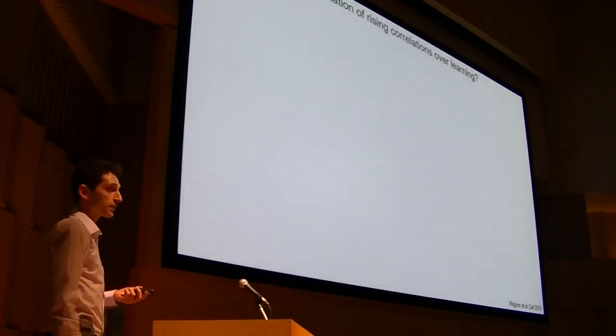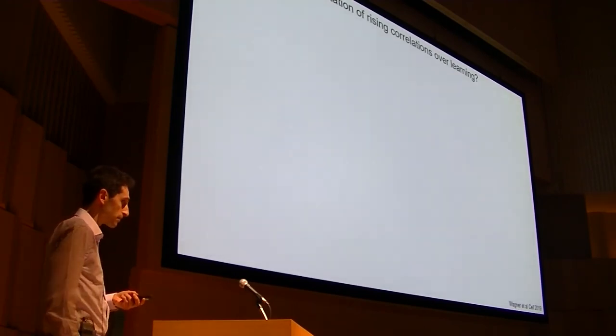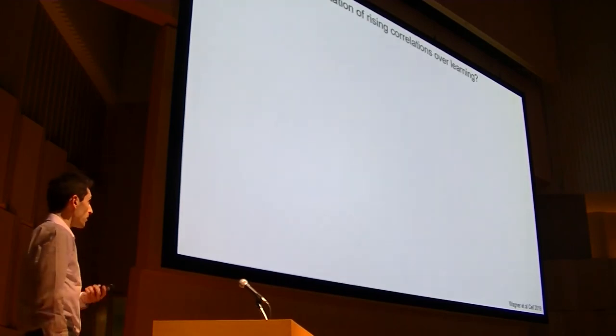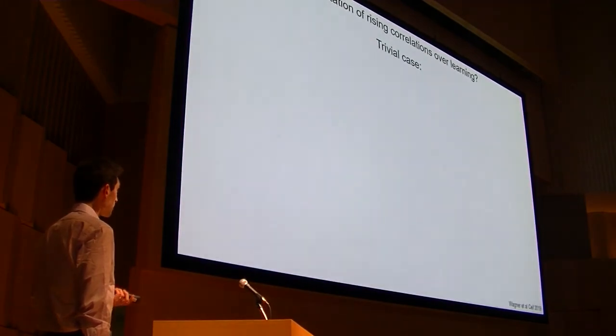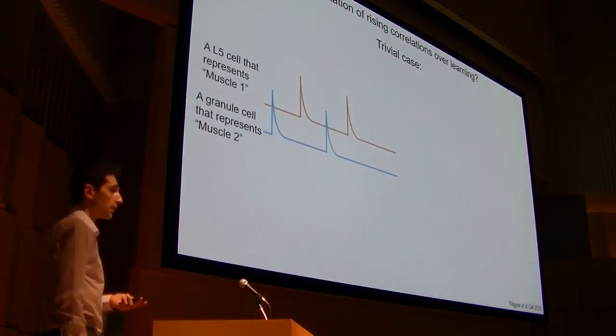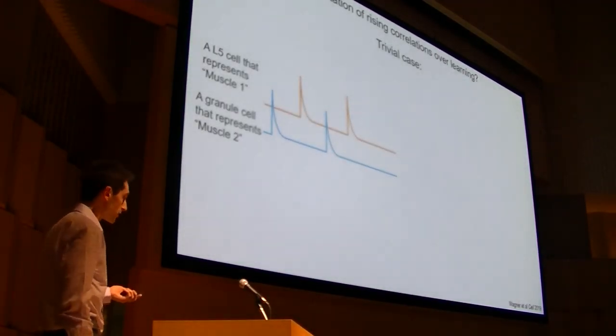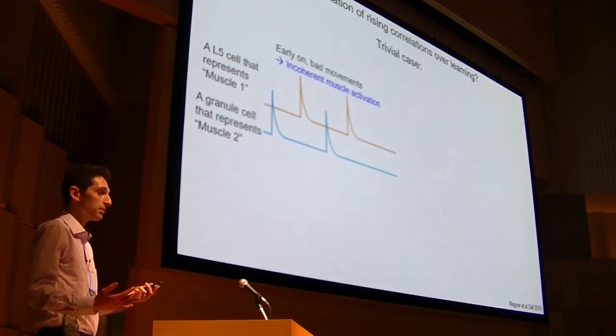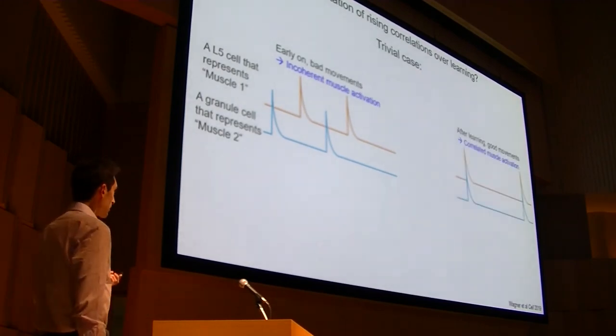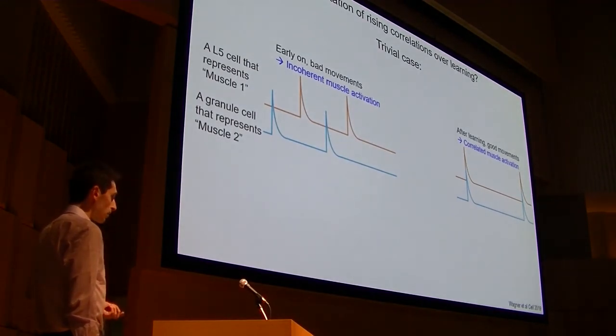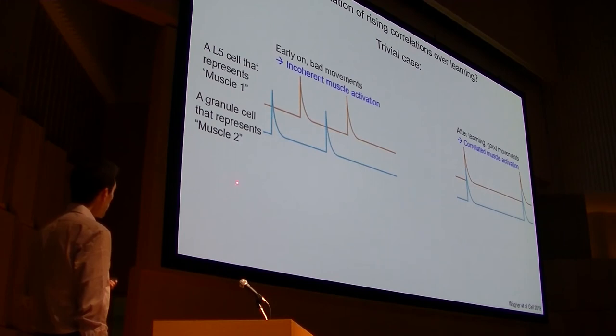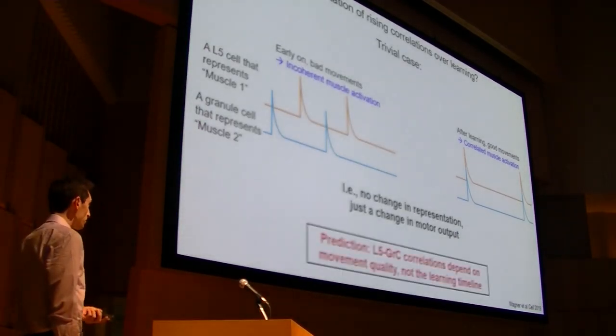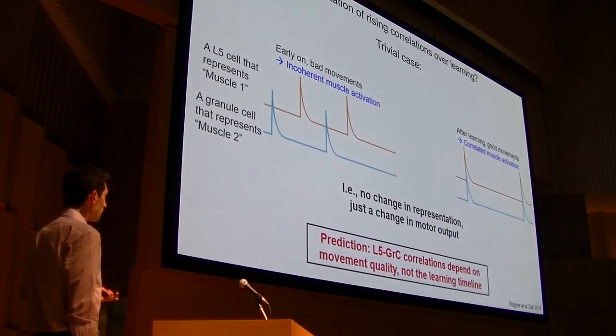Okay, so now we get to sort of the crux of the issue, which is what's the systems-level interpretation of these changes in correlations. So the one that I'm sort of pushing on you, you can probably tell, is that there's a big reorganization of the activity in premotor neurons where they could be better representing the task, and so forth. But when we were shopping these results around, it was pointed out to us that there's another possibility that would kind of realize these results. And that is, you know, imagine that each neuron is representing a fixed motor quantity. And for argument's sake, I'll just call that muscle. So there's some layer five cell that represents muscle, and the granule cell that represents some different muscle. And early in learning, there's a lot of bad movements, and maybe bad movements mean that different muscles are incoherent or act against each other. And then after the mouse has learned, he's making more good movements, and maybe good movements means that different muscles are more correlated with one another. And therefore, even if these two neurons are not changing what they're representing at all, they sort of spuriously appear more correlated, and there's not actually a real change in what's happening in the circuit. So the prediction of that would be that these correlations depend on movement quality rather than the learning timeline that I proposed.